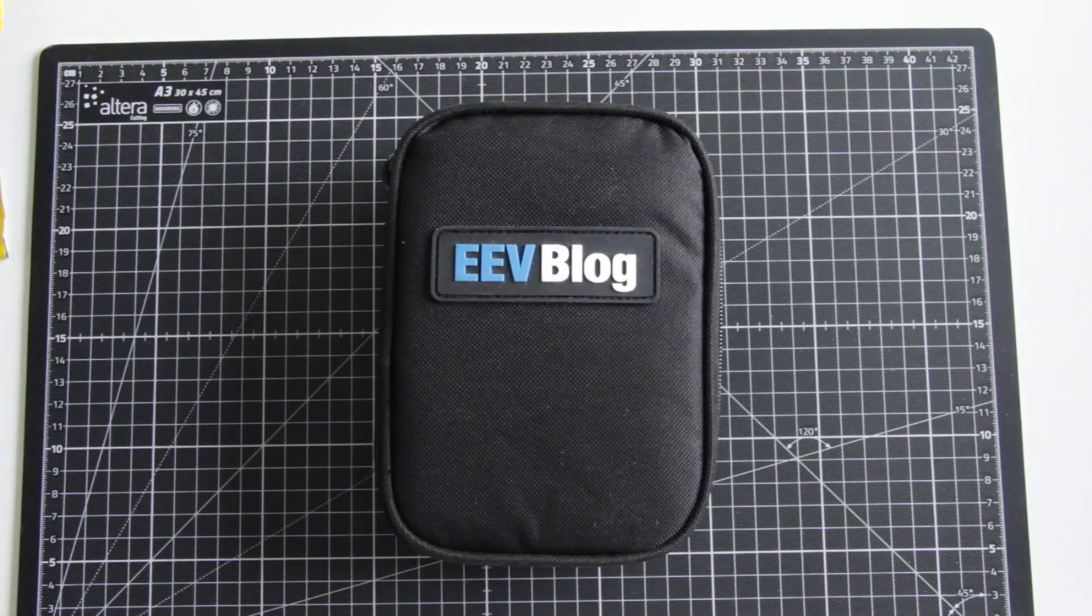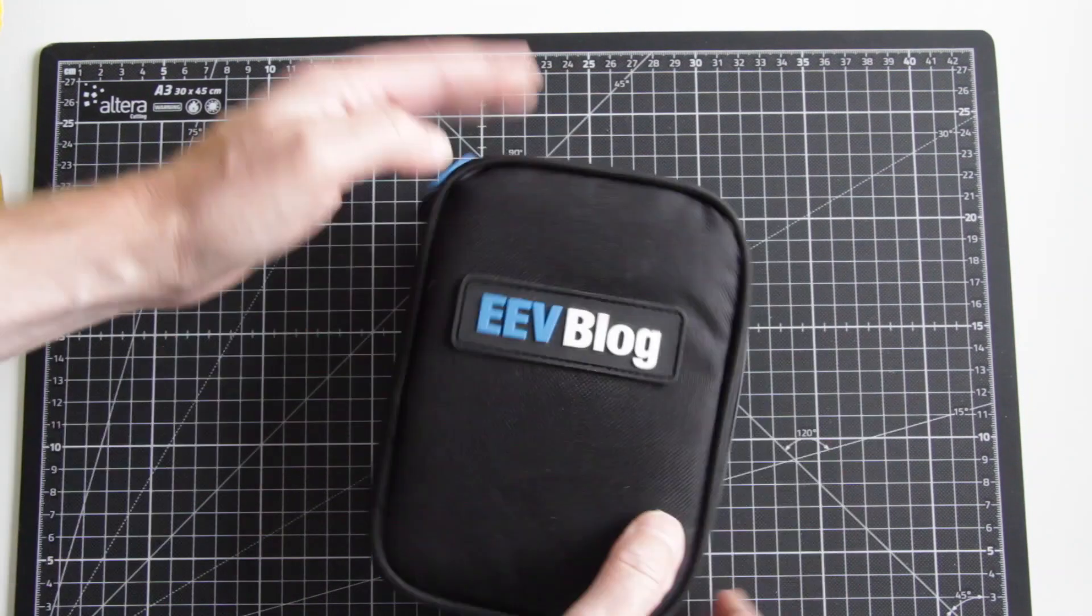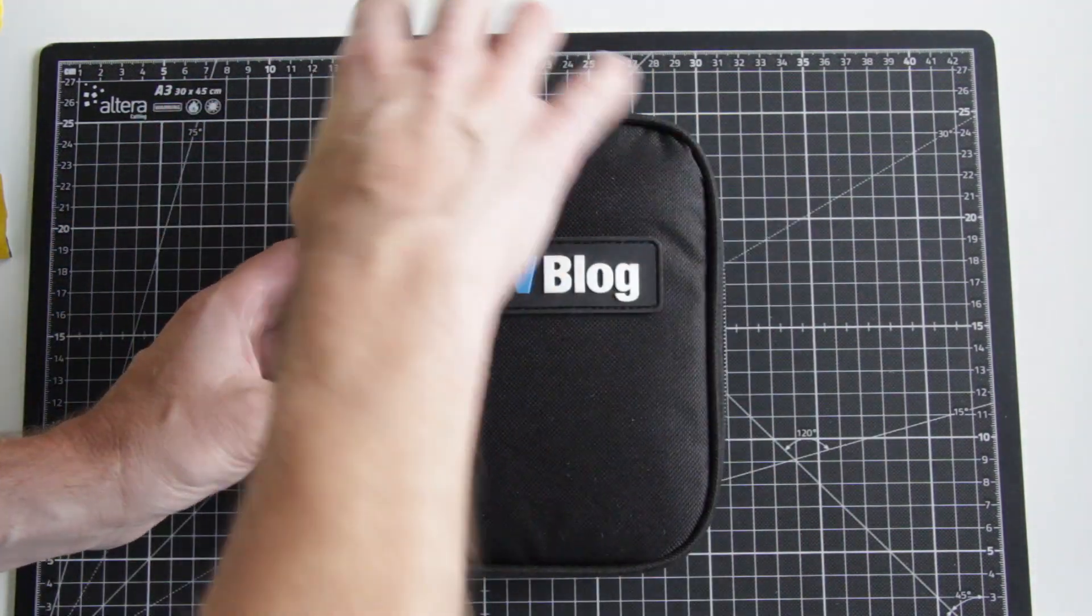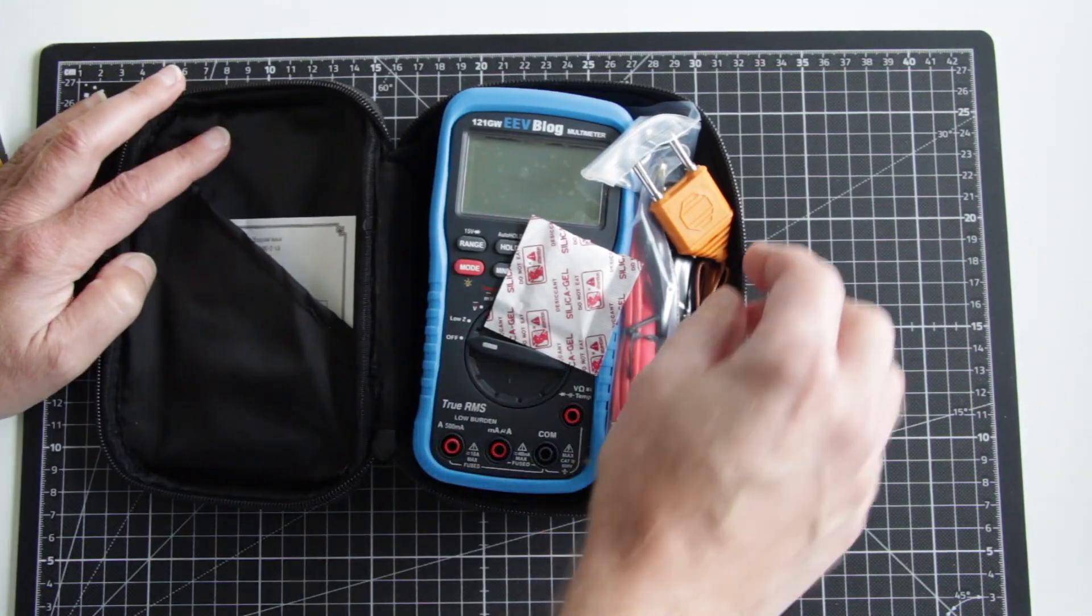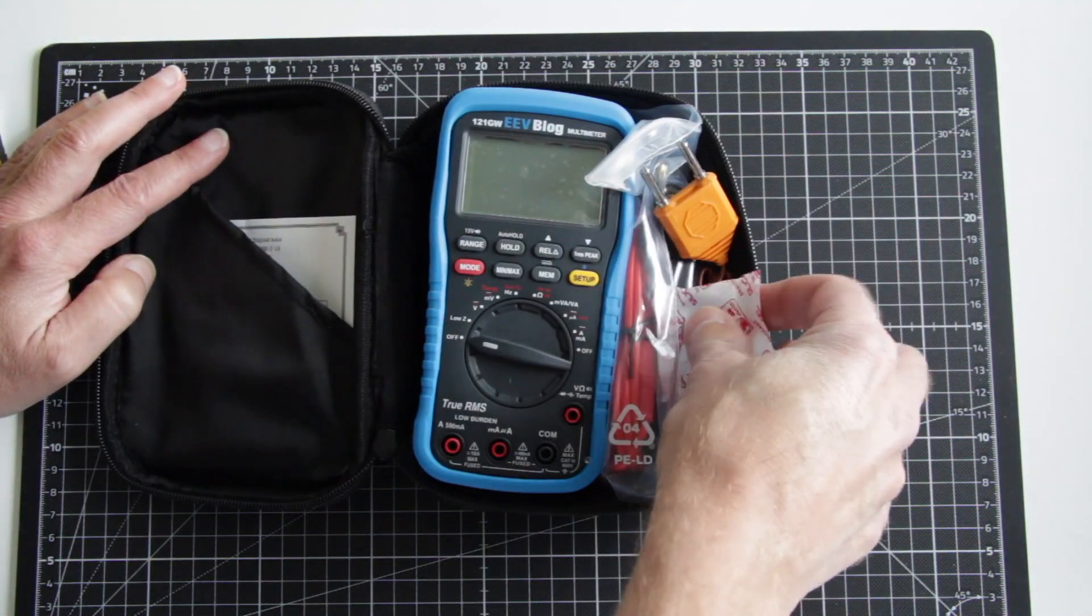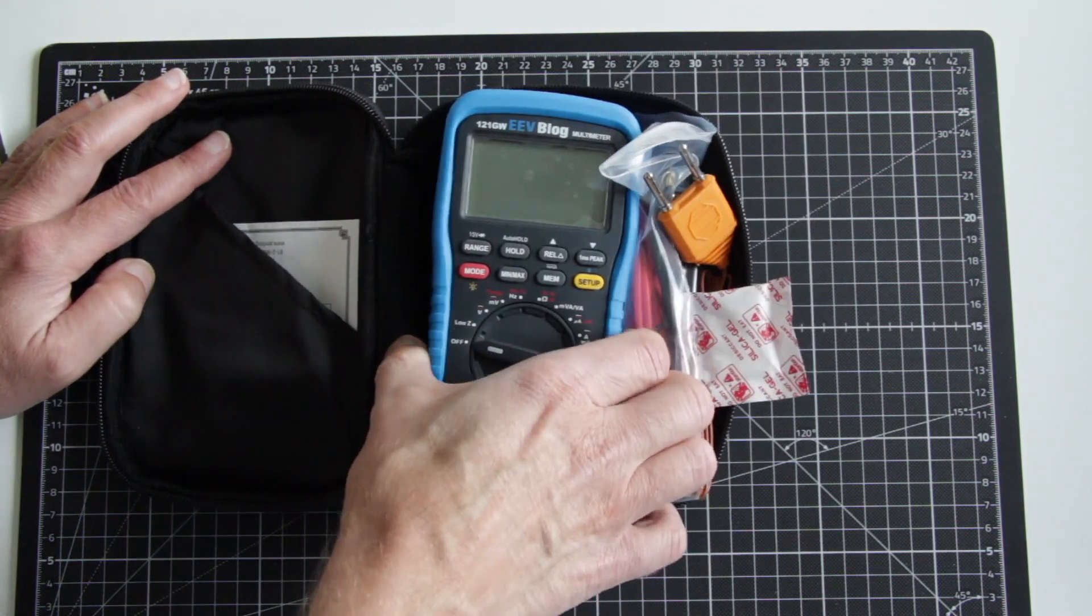Wow, okay. So some of you already know what this is. It's a black baggy thing. Oh, look at that. It's a multimeter and of course it's Dave Jones multimeter.